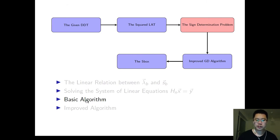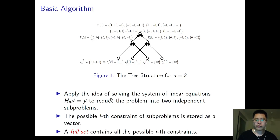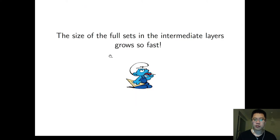And then we introduce our basic algorithm. We apply the idea of solving the system to reduce the problem into two independent problems. We firstly guess all the possibilities and combine the possibilities related values and compute the possible S constraint of subproblems. We record the S constraint as a vector. And all the possible constraints are contained in a full set here.